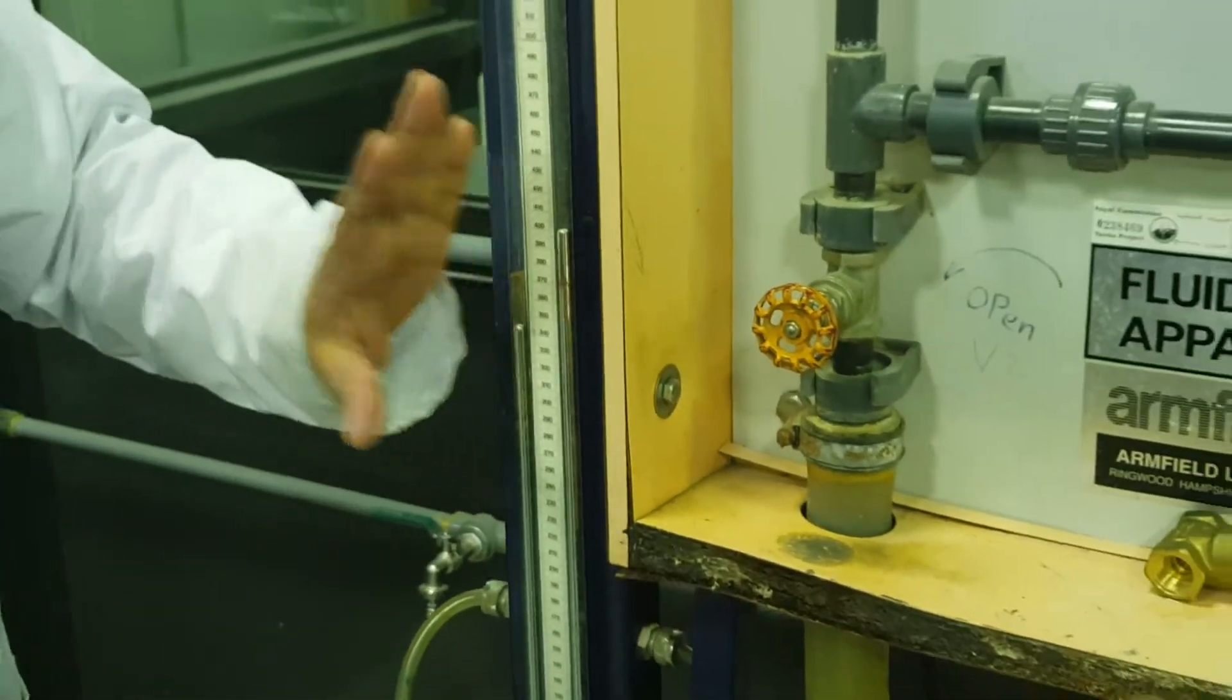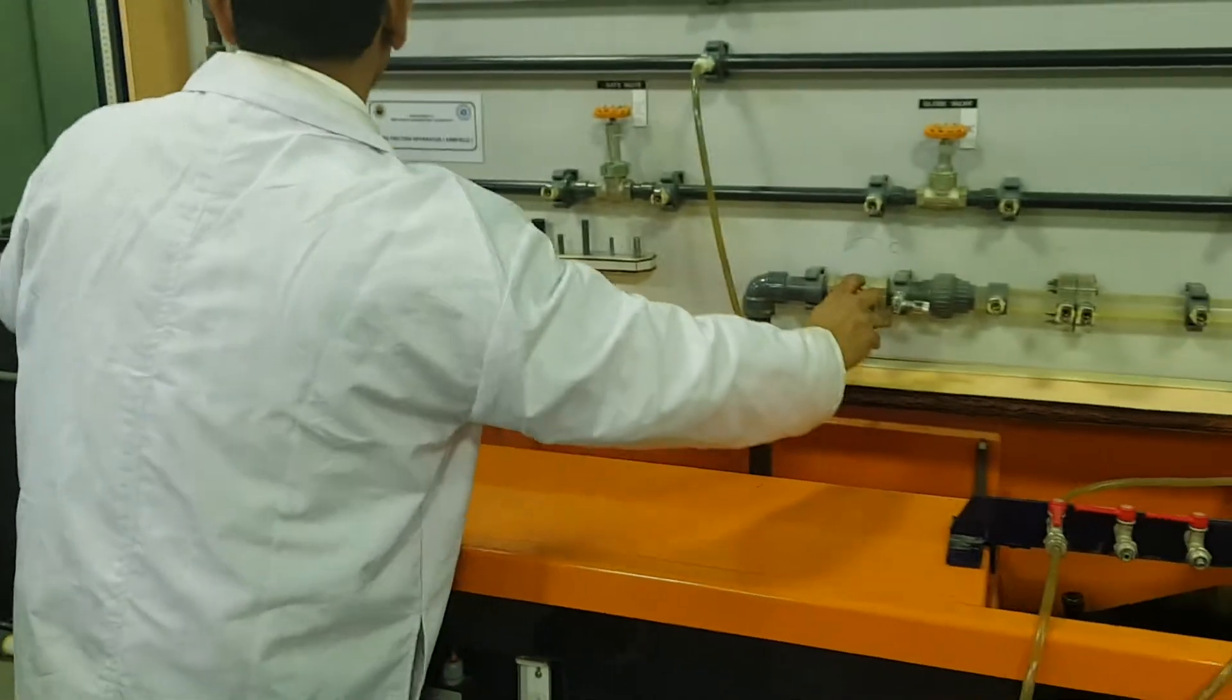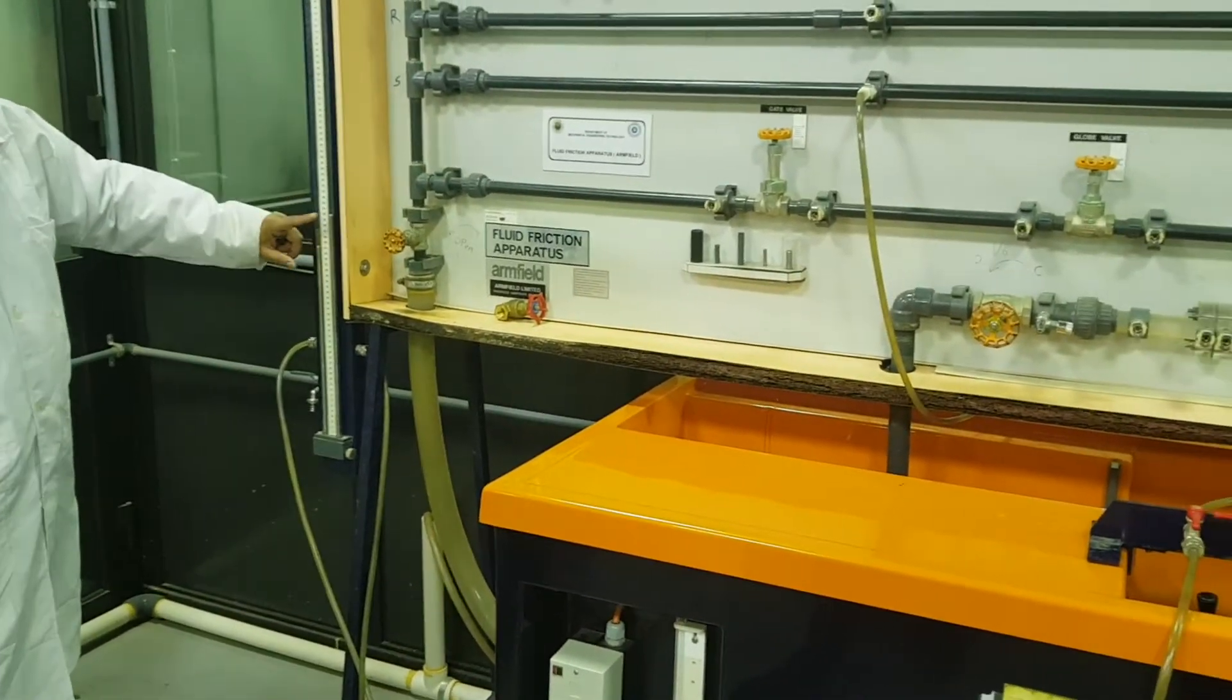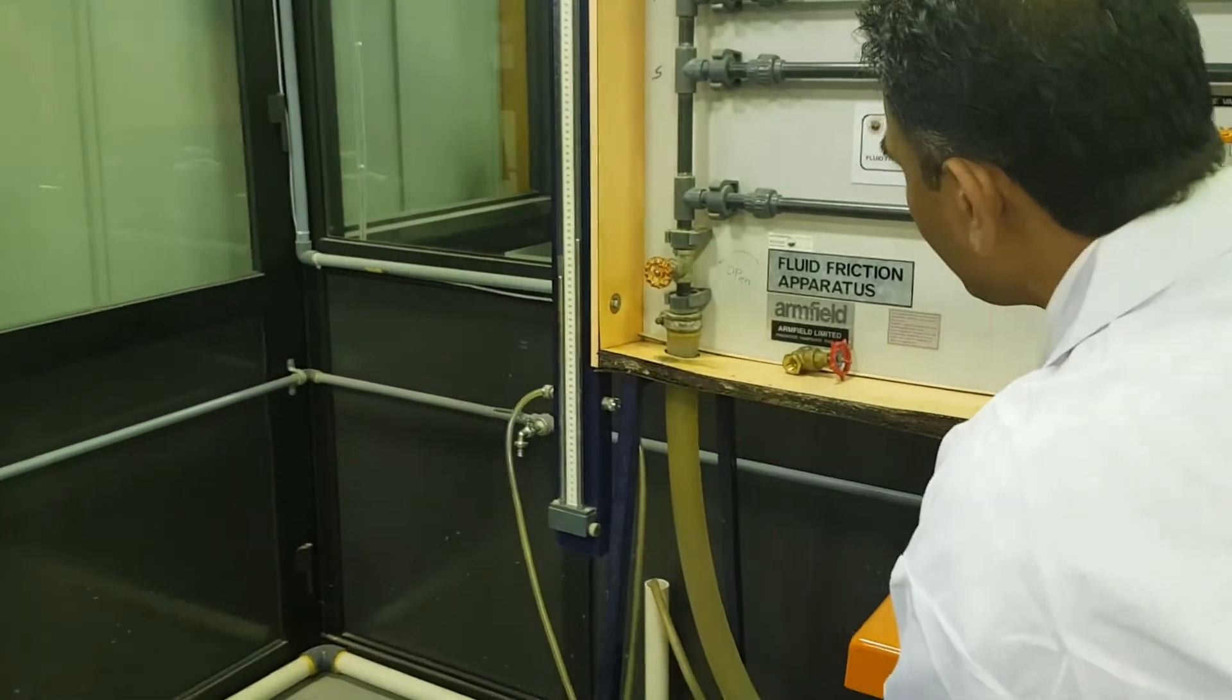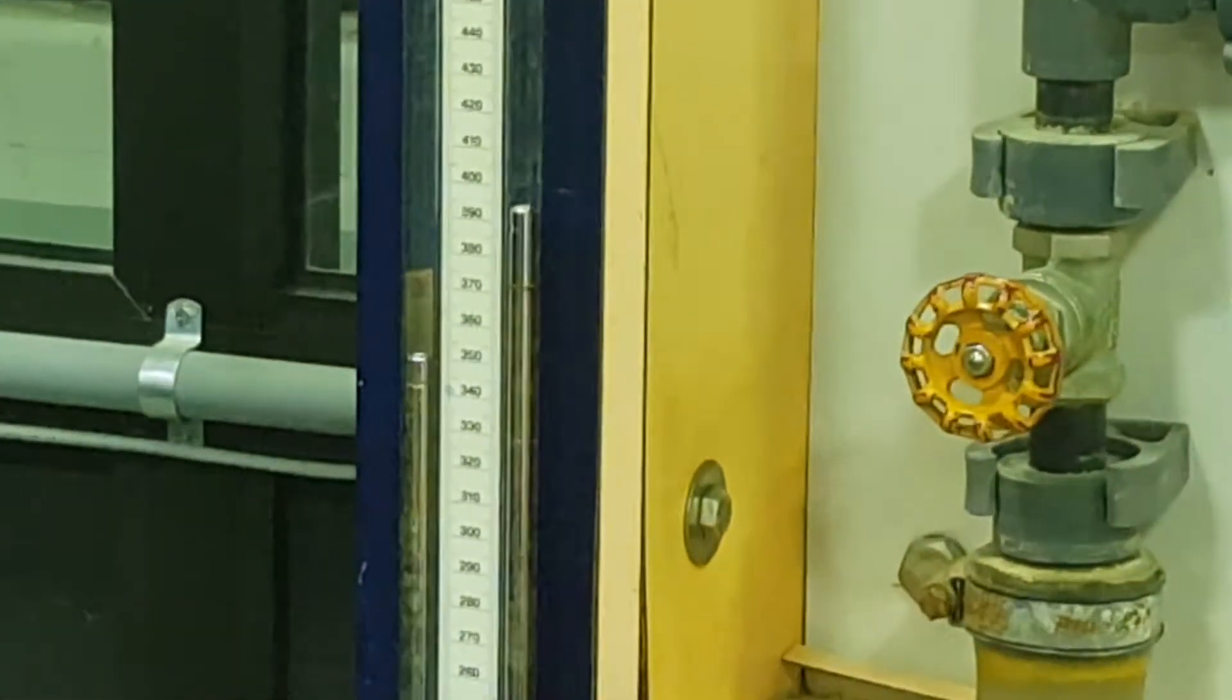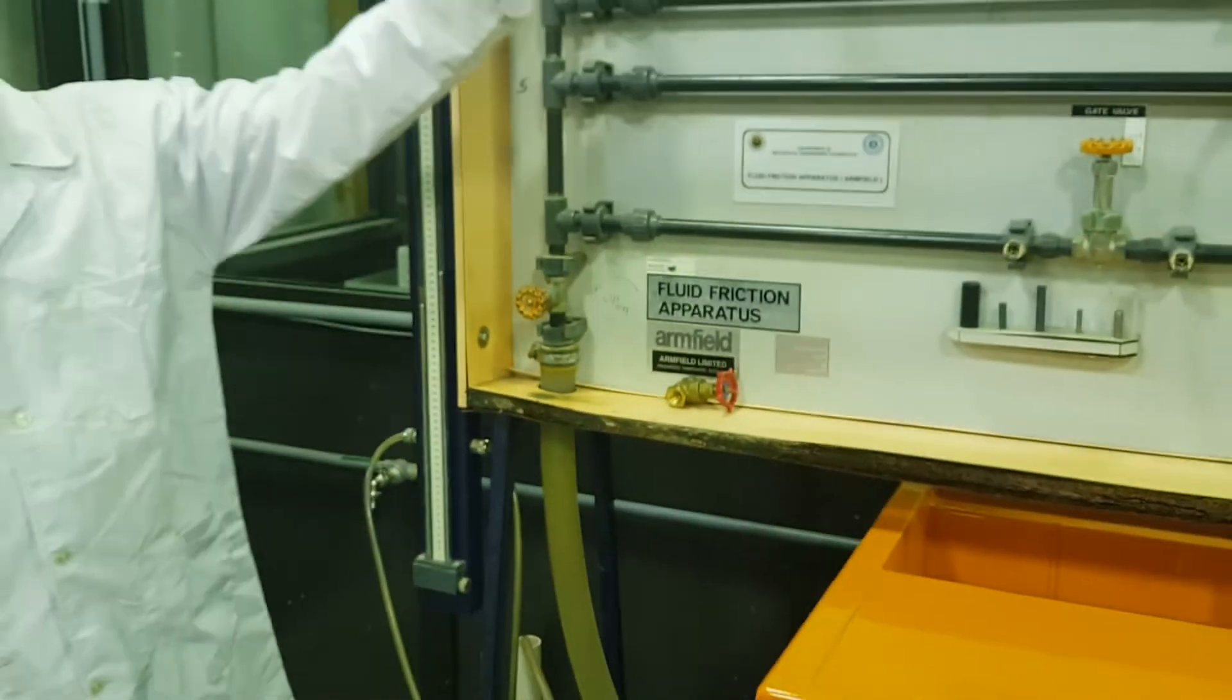Then next, we can find out the difference. Now next reading, close valve DT. Watch here, watch on mercury manometer. If it is deflected, then you can take another reading. So you can sit here and close it. Yes, there is a deflection, now I will stop here. A small deflection, I will stop. Record the readings, H1, H2, we can find out pressure.